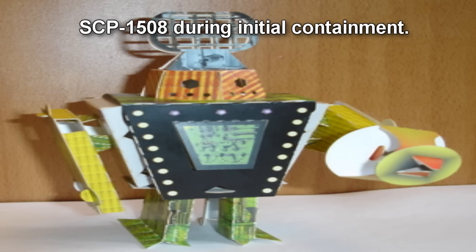SCP-1508 is to be held within a containment chamber located in Site-77. It is to be restrained within the chamber and observed on a constant basis. In the event that SCP-1508 assists with the maintenance of the containment chamber or attempts to interfere with maintenance personnel, it is to be moved temporarily to another room.